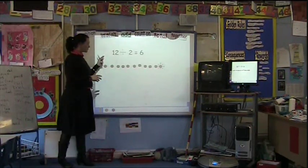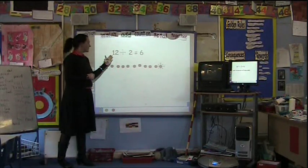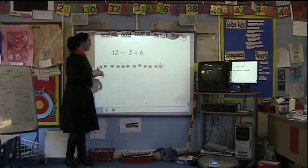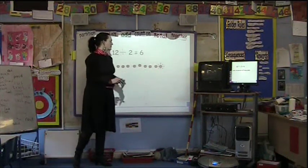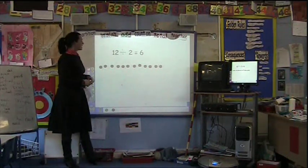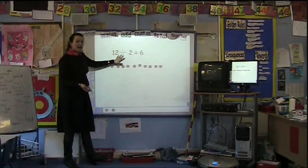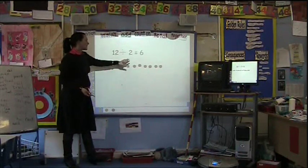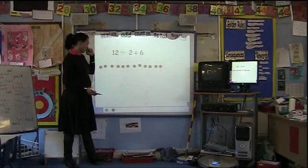When we look at a dividing sum, we encourage the children to take the first number and that tells them how many objects to get, so here we have 12 buttons. This symbol tells us to divide, to share, to find groups of, or sets of, or lots of, and this number here tells me that I need two sets or two groups.